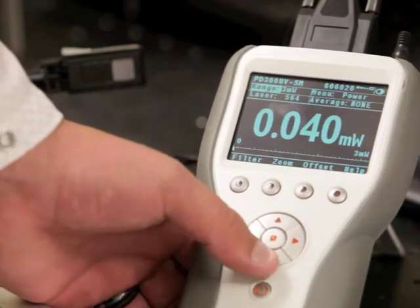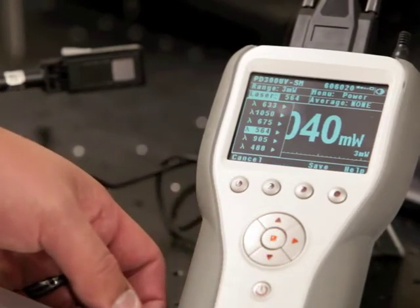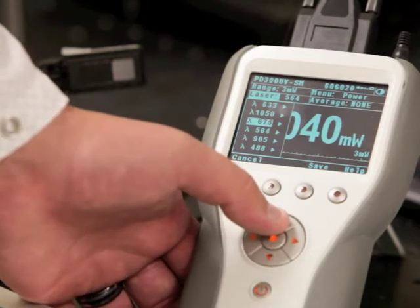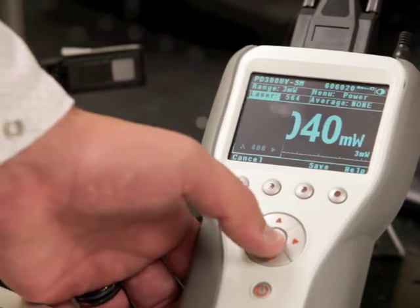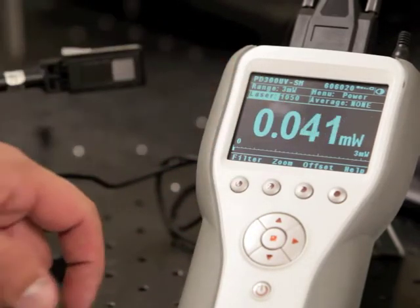Using the navigation keys, I go into the laser function and you can see it displays the six favorite wavelengths. If I want to select one of those wavelengths, just arrow to that wavelength, press the select key and you can see it has selected your wavelength.